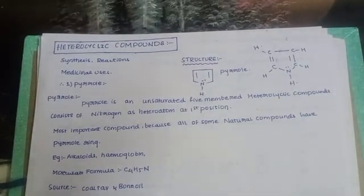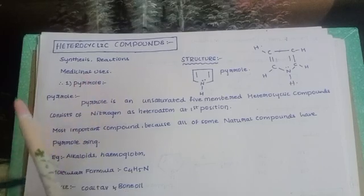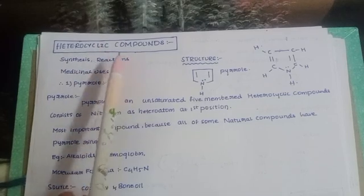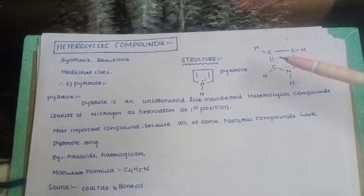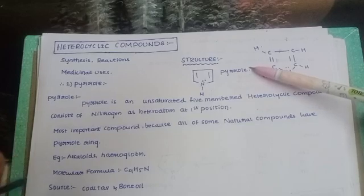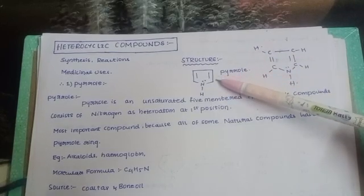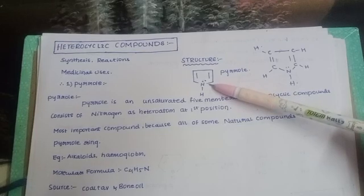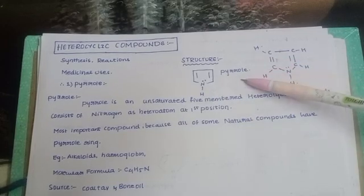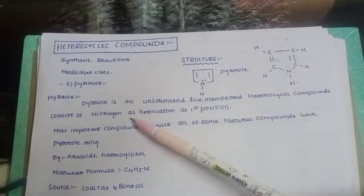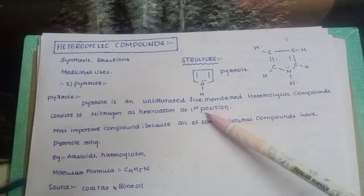This is a very important topic. First of all, I will explain the structure, and structure is very important. We are talking about the reagents. The structure is pyrrole. Pyrrole is a 5-membered ring with one nitrogen at the first position. It is an unsaturated compound. Pyrrole is an unsaturated 5-membered heterocyclic compound, consisting of nitrogen as the heteroatom at the first position.